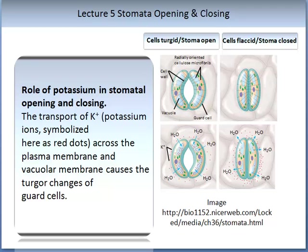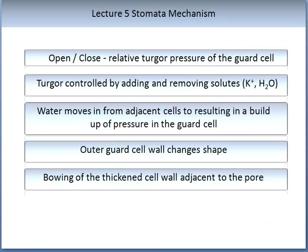So how does the water get pumped in and out? It is done by a potassium opening and closing transport mechanism. Potassium K+ is an ion, symbolised on the image by red dots. It moves across the plasma membrane and the vacuole membrane of the stomata pore, allowing a potassium pump where potassium and water are exchanged. The ability to open or close a stoma is due to the relative turgor pressure in the guard cell — turgor controlled by adding or removing solutes: potassium and water.